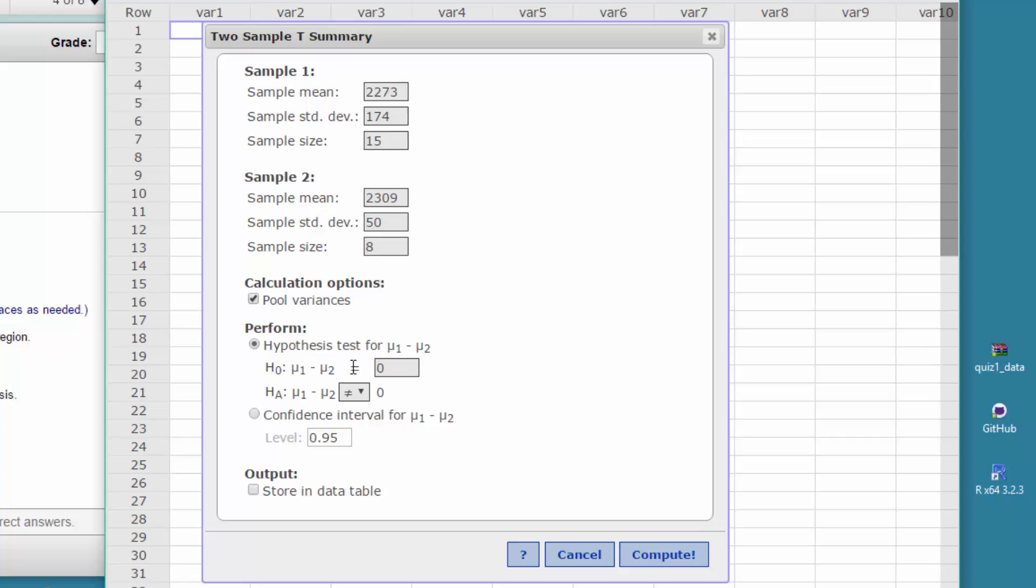Our alternative is what we've got to get in there correctly. We want that mu 1 minus mu 2 is greater than 0. That's our alternative.